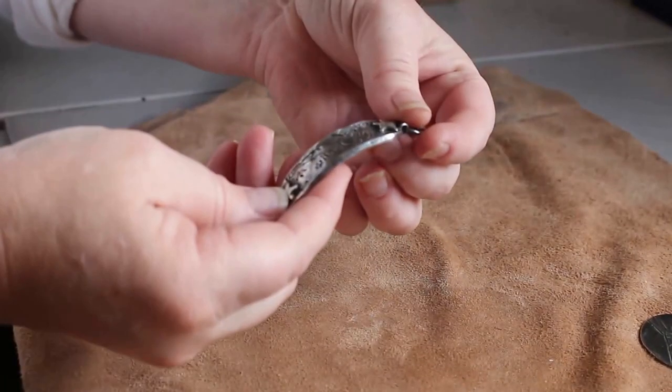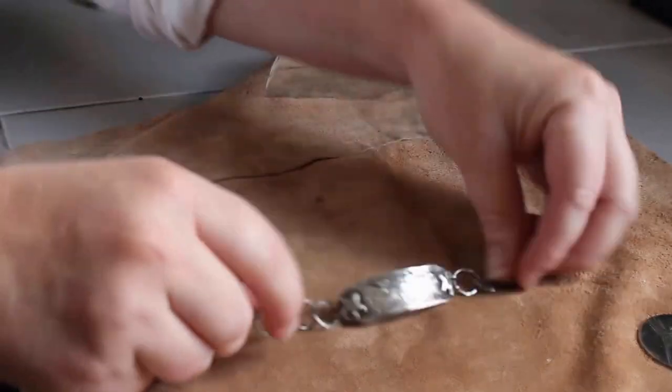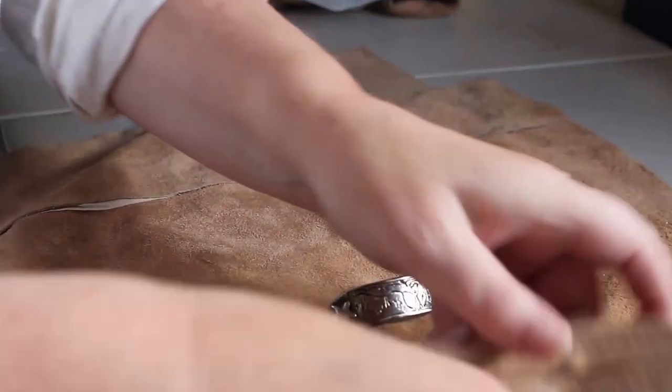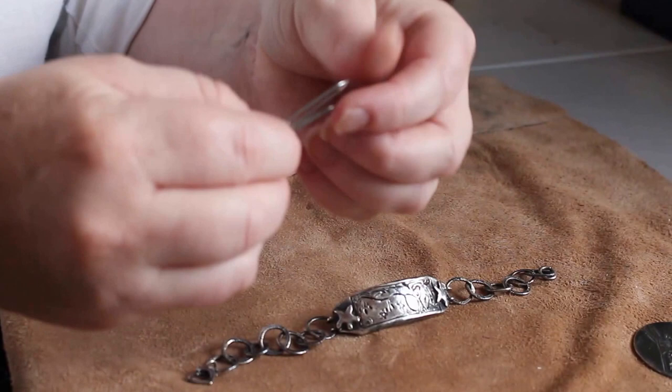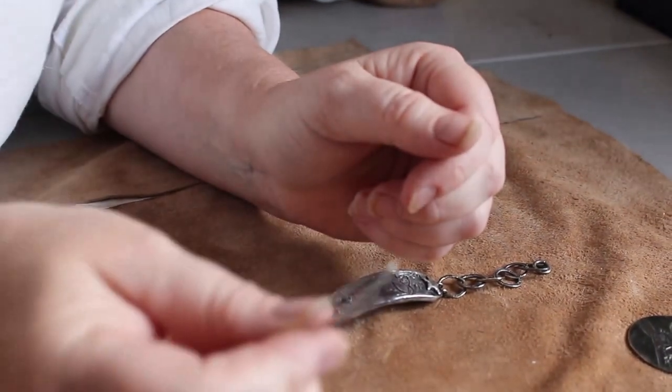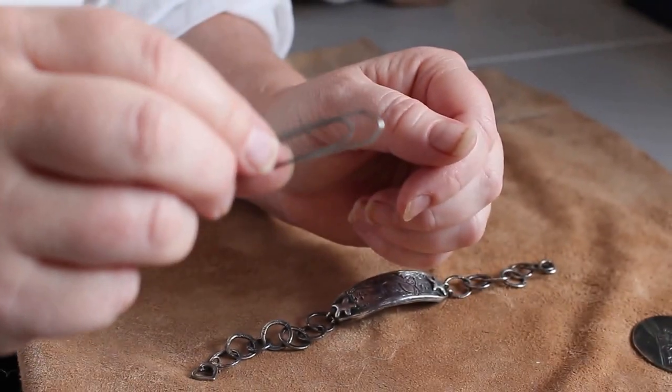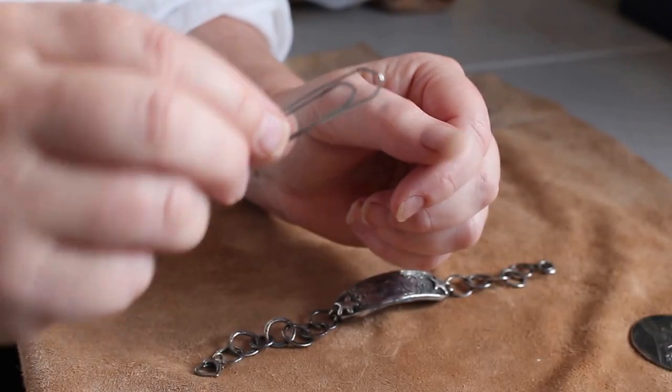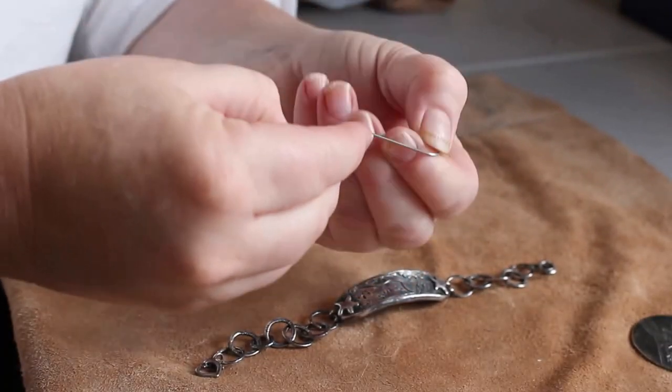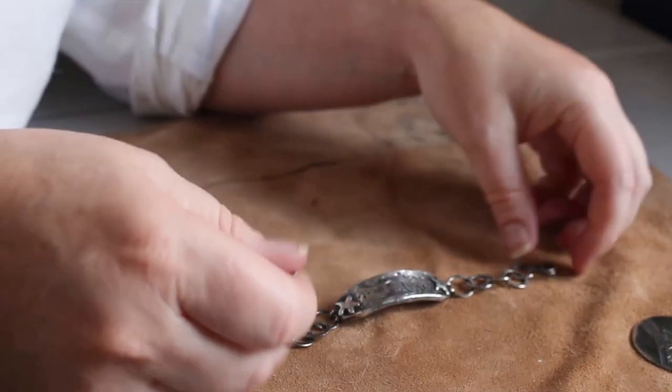The trick is to get a paper clip, a fairly large one that's larger than the usual small ones, and open it up. Make sure you've got the bracelet the way around that you actually want to put it on.